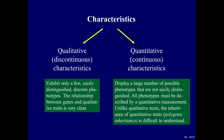Characteristics can be divided into two groups: qualitative or discontinuous characteristics, and quantitative or continuous characteristics. Qualitative characteristics exhibit only a few easily distinguished discrete phenotypes — for example, red vs. white flowers, right-handed vs. left-handed, or blood type A vs. blood type B. The relationship between genes and qualitative traits is very clear. Quantitative or continuous characteristics display a large number of possible phenotypes not easily distinguished; all phenotypes must be described by quantitative measurement. Unlike qualitative traits, the inheritance of quantitative traits — polygenic inheritance — is difficult to understand.